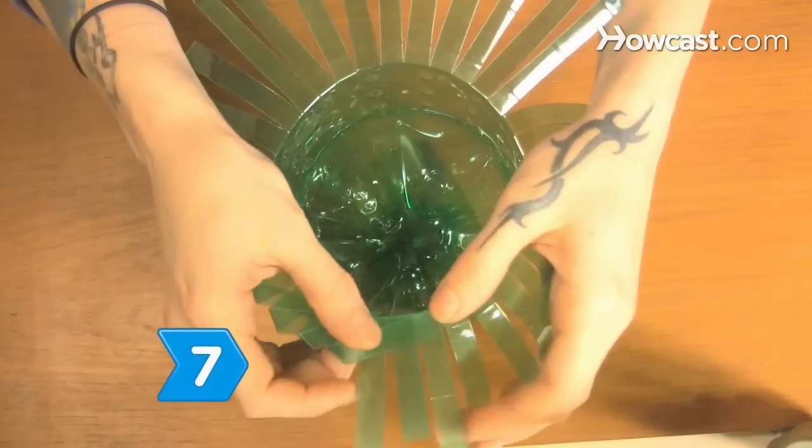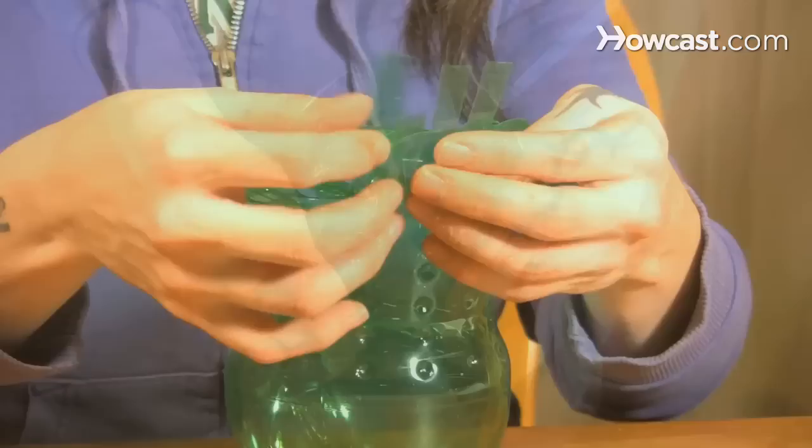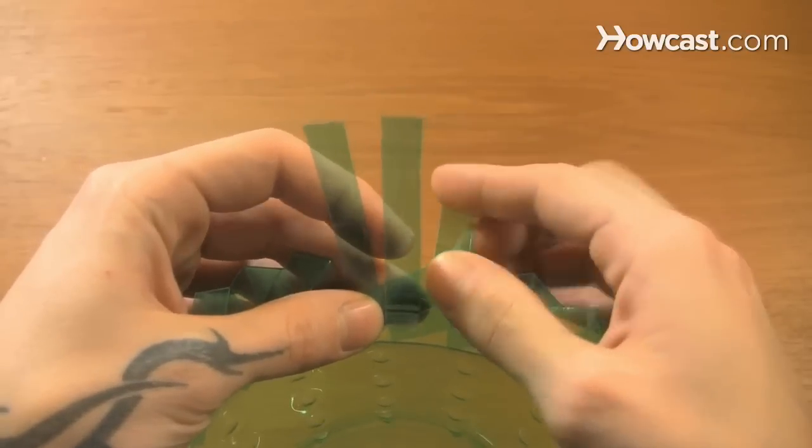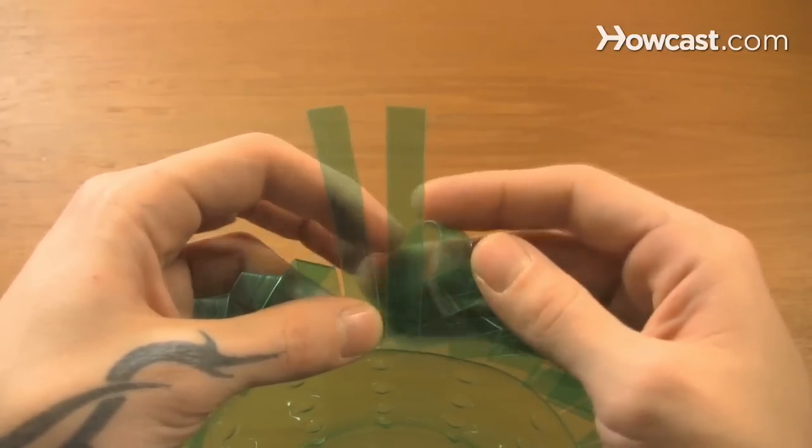Step 7. Continue weaving the strips in this alternating pattern until only three strips are left. Tuck each of the last three under the next strip until they're tucked in completely.